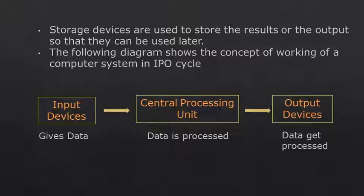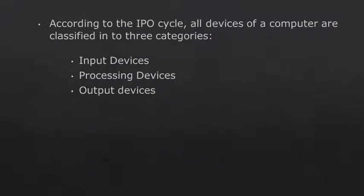The following diagram shows the concept of working of a computer system in the IPO cycle. Input devices give data to the CPU. This data is processed in the CPU and given to output devices, which display the data. According to the IPO cycle, all devices of a computer are classified into three categories.